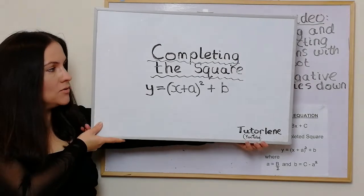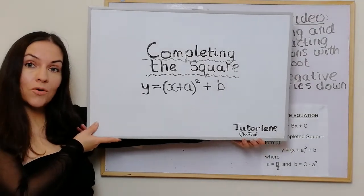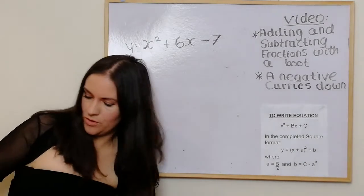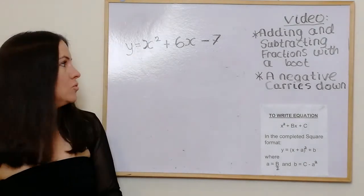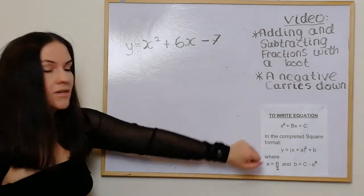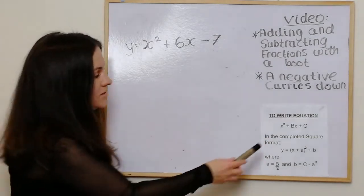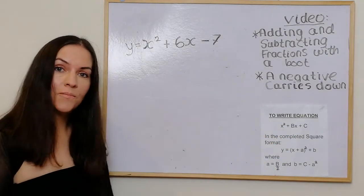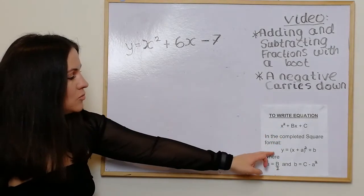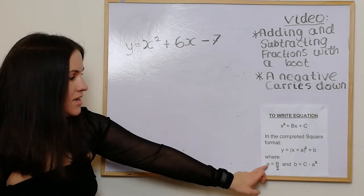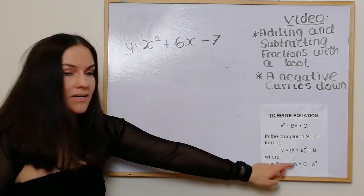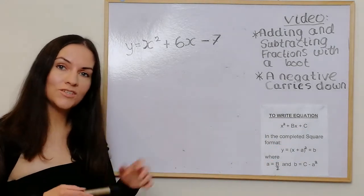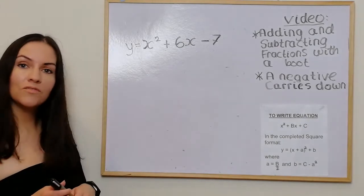Hello and welcome to this week's video on completing the square, as per viewer request. I'm going to show you different examples of how to do this using a formulaic approach. The formula is based on the idea that if we get an equation in the x² + bx + c format, we put it in completed square form: to get little a we do b over 2, and to get little b we do c minus a squared.